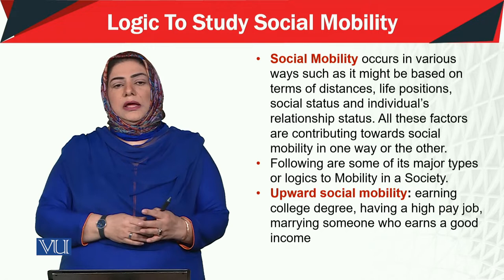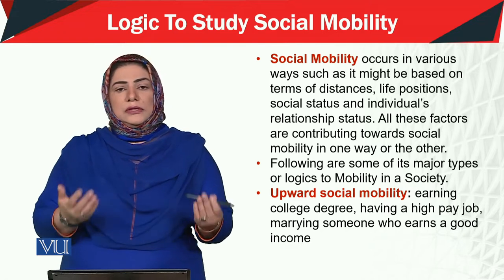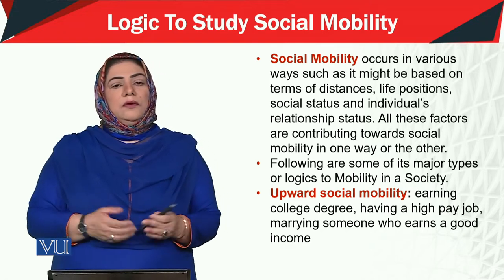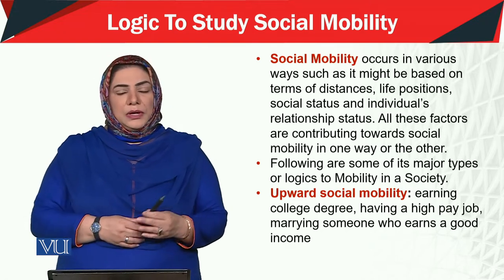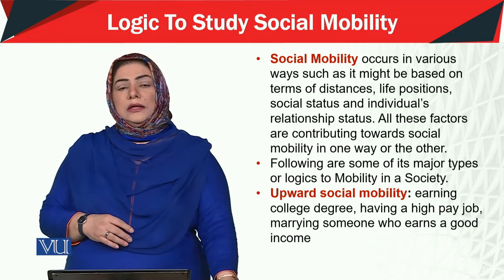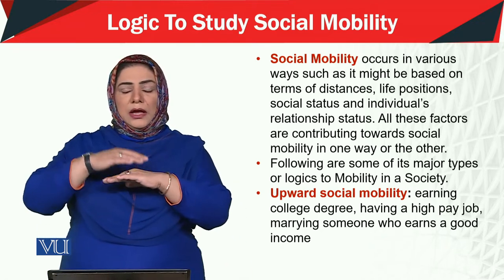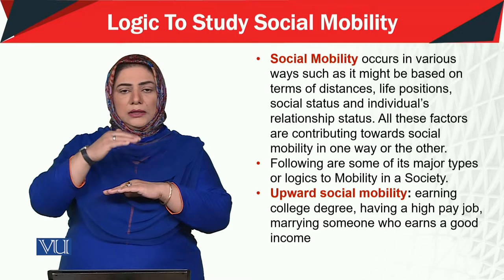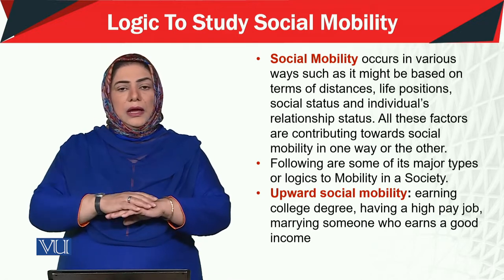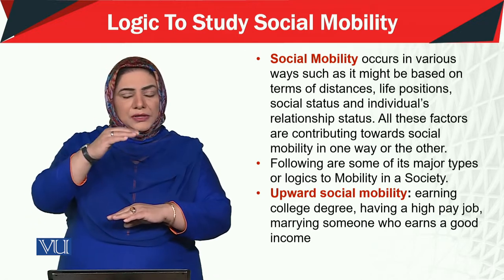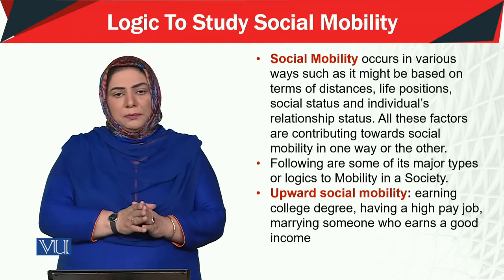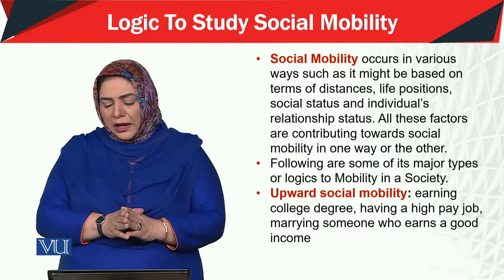There are many factors and examples of upward mobility. For instance, a person's education level changes over time — from basic schooling, to Matric, FA, BA, MA, and then PhD. Through education, you change your status.